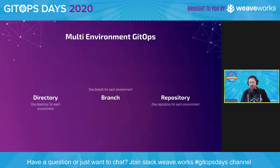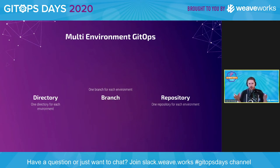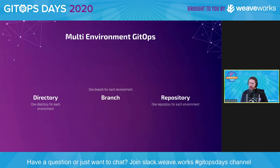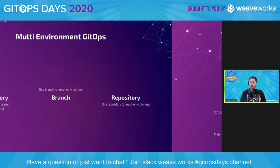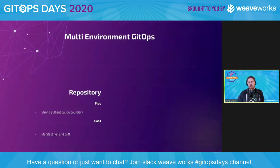I want to break it down into the three ways I see people handling multi-environment GitOps. The first is directory-based: in a repository there are directories for each environment — staging, dev, and production. Another approach uses branches as environments, so we'd have branches called dev, staging, and production. Then there's having a separate repository for each environment, which I want to talk about first because I see it less frequently.